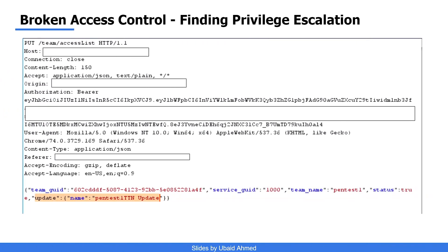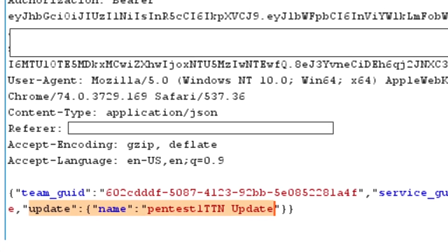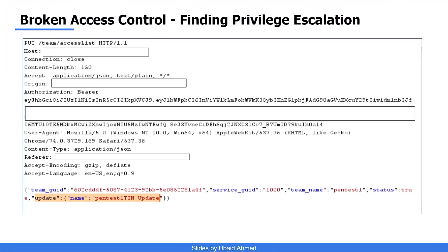I intercepted the request where the admin of team 'pentest one' was updating the team name. Observe that I have a team GUID, which is the identifier of the team being updated. Simply changing this value allowed me to change the name of another team. This happened because the backend did check whether the requester was an admin, but it did not check if they were the admin of the specific team being updated. Even though an admin is involved, this is a case of horizontal privilege escalation — one admin acting on behalf of another admin.